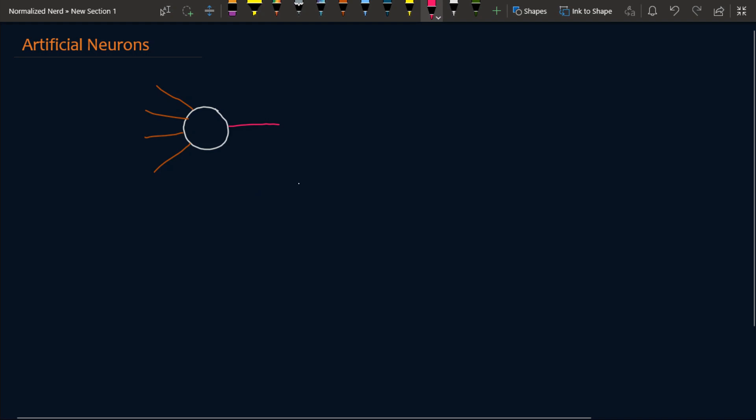Before diving into the details of an artificial neuron, I'd like to tell you about what came before. Mathematicians and computer scientists researched for a long time before coming up with the artificial neuron. Before the artificial neuron we had perceptrons. I'm pretty sure you've heard of this term before, but in many cases they treat a perceptron as an artificial neuron.